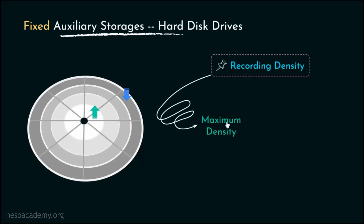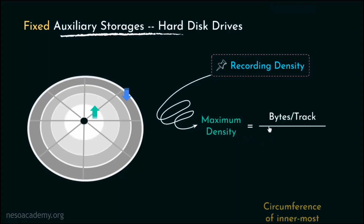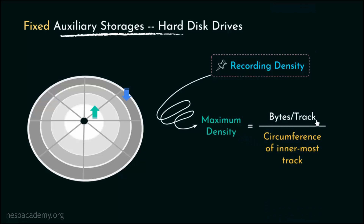Maximum recording density can be calculated if we divide the bytes per track — that is, the track capacity — by the circumference of the innermost track, because recording density happens to be the highest in case of the innermost track.